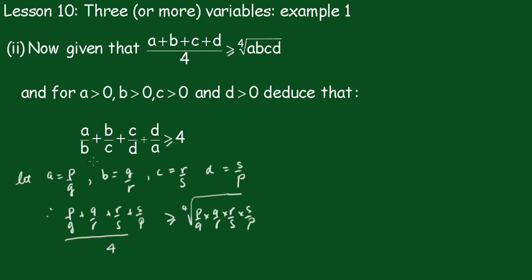And of course all these cancel: this one with this one, this one with this one, this one with this one, this one with this one, and again we get 1.